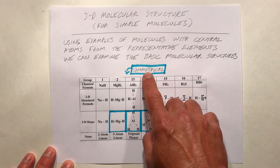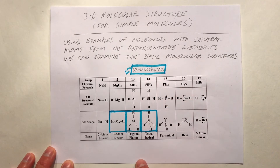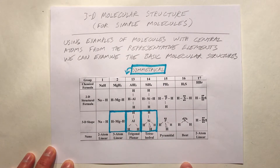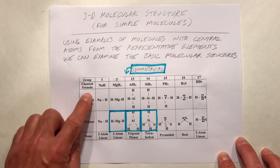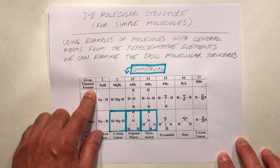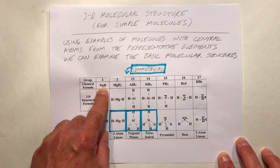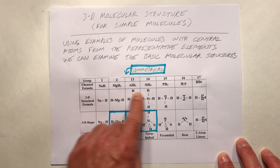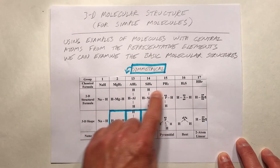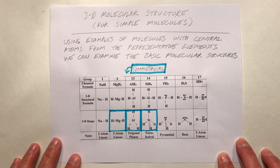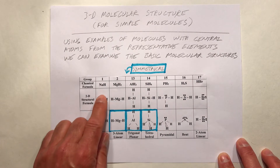The symmetrical structures are indicated with the blue outline. We have chemical formulas — sodium from group 1 bonded to one hydrogen. I've used hydrogen throughout because it doesn't have any non-bonding electron pairs, so it's easy to draw structures.